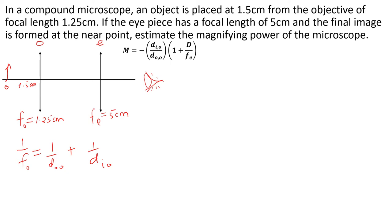The first lens is the objective lens and the lens next to the eye is the eyepiece. The objective has focal length 1.25 cm and the eyepiece has 5 cm. The formula for calculating magnifying power is: negative d-image for the objective over d-object for the objective, multiplied by (1 plus D over f_e), where D is the least distance of distinct vision, normally positive 25 cm.